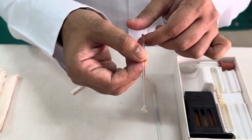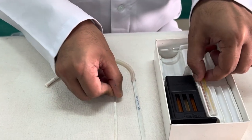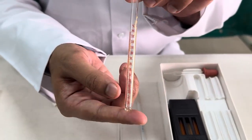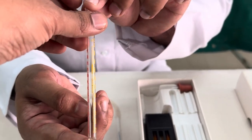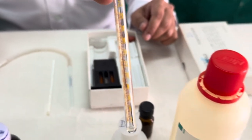Then this is a glass rod or the stirrer used to mix the contents. Then the most important one is this hemoglobin tube. Now there are certain graduations which are present on this hemoglobin tube.